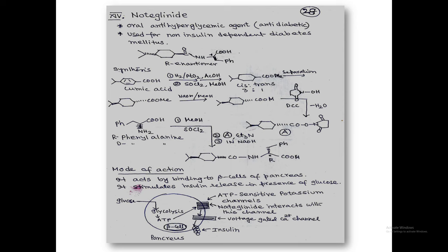Let us consider the next example, nateglinide — an antidiabetic drug. India is the diabetic capital of the world. This molecule is a blood sugar-lowering agent: under diabetic conditions, blood sugar level goes up (hyperglycemia). By giving this medicine, the sugar level in the blood comes down — it is an anti-hyperglycemic agent. It is orally active (available as a tablet) for non-insulin-dependent diabetes mellitus.